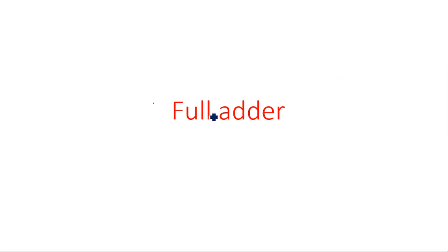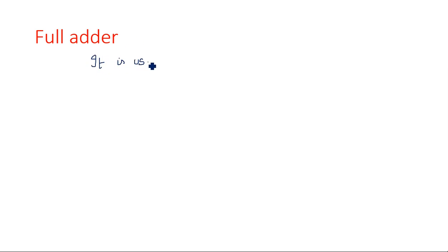Hi everyone. In this video I am going to tell you about the full adder. In the last video I explained the half adder — how to draw the half adder circuit and how to simplify the expressions for sum and carry using K-map. Now we are going to apply the same procedure for the full adder. The difference between half adder and full adder is that a half adder adds only two bits of information, whereas a full adder adds three bits of information.